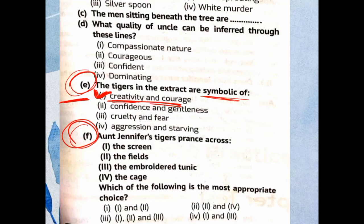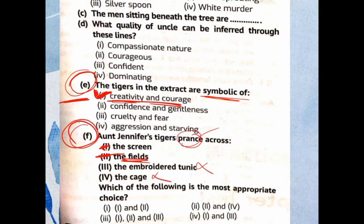Part F: 'Aunt Jennifer's tigers prance across...' — the screen, the fields, the embroidered tunic, or the cage? The correct answer is the first option: the screen. So Aunt Jennifer's tigers prance across the screen.